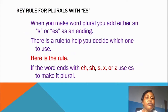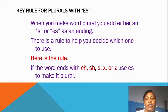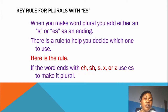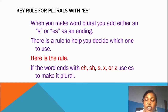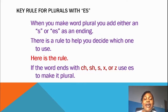The key rules for plural with ES: when you make a word plural, you add either an S or ES as an ending. There is a rule to help you decide which one to use. Here is the rule: if the word ends with CH, SH, S, X, or Z, use ES to make it plural.